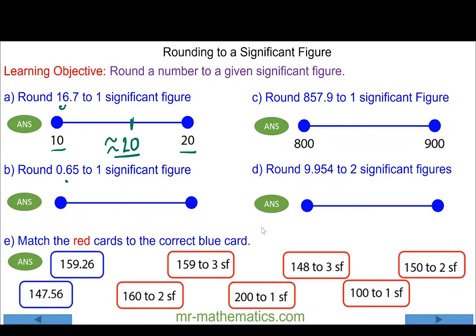For question b, the most significant figure is the six, because we have zero units and the six has a greater place value. So it is between 0.6 and 0.7, and it is exactly halfway. However, because the number after the most significant figure is five or more, it does round up the six to seven, so it becomes approximately 0.7 to one significant figure.